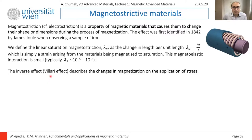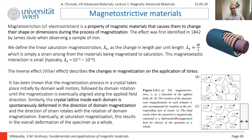There is also an inverse effect, sometimes called the Villari effect. When you apply stress to your magnetic material, you can change the orientation of magnetization. So you influence magnetic properties by applying physical mechanical stress.